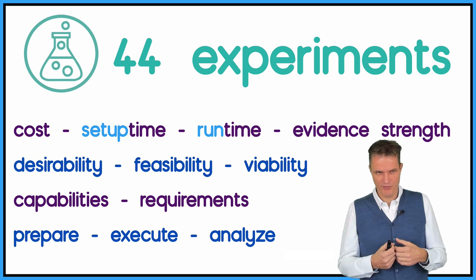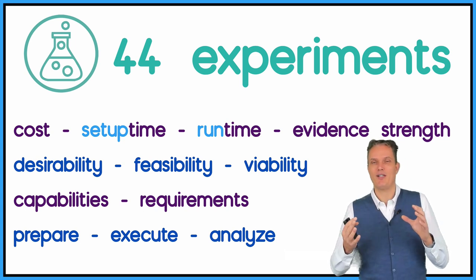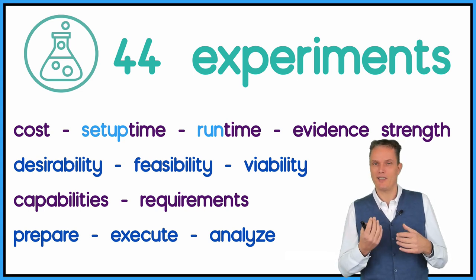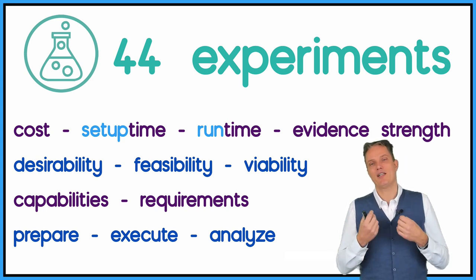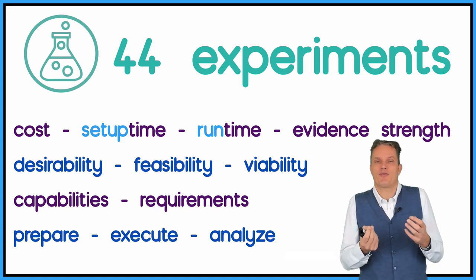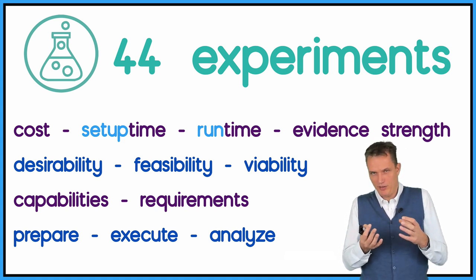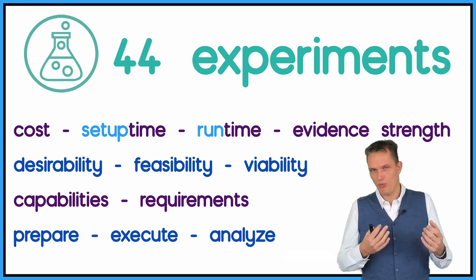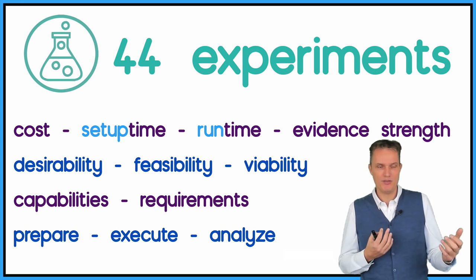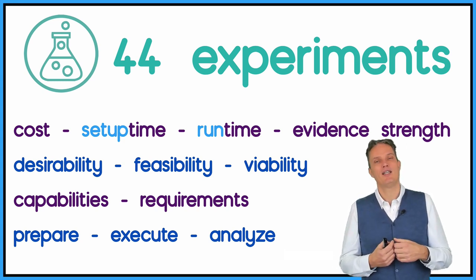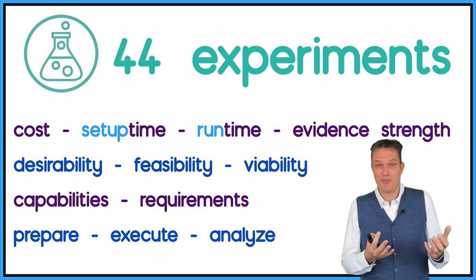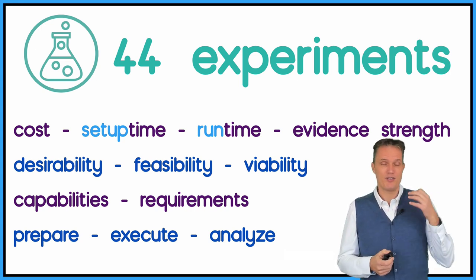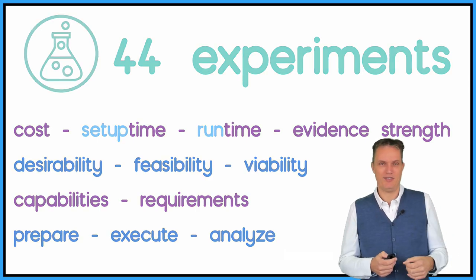Well as I told, the book has 44 experiments and they are written very nice. Each experiment talks about the cost of an experiment, the setup time, the run time, what kind of evidence strength does it have. It also describes of course is the experiment helping you in the viability stage or in the desirability stage. It talks also about what do you need for these experiments, what kind of capabilities do you need, what requirements do you need, and how do you prepare for an experiment, execute and analyze the results of an experiment. So this is really great, a really field guide for these experiments.